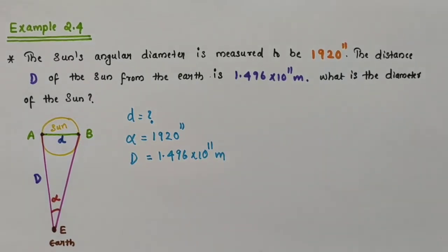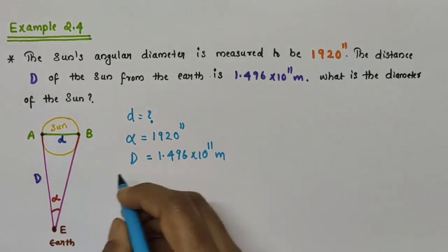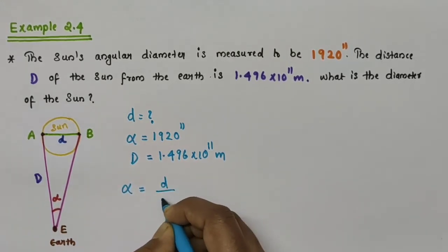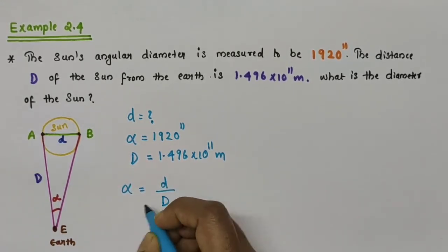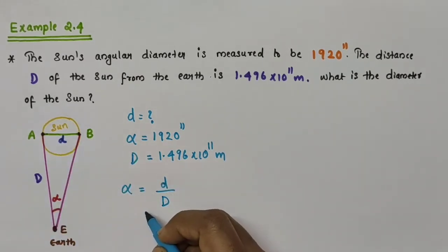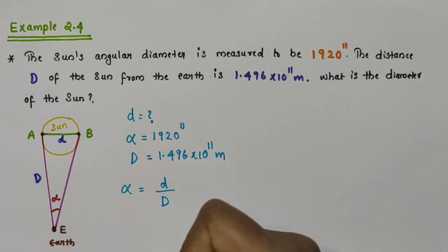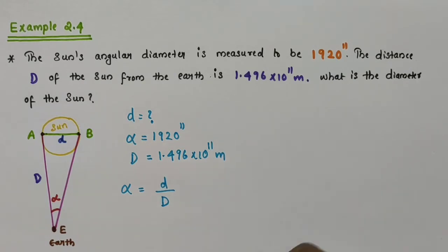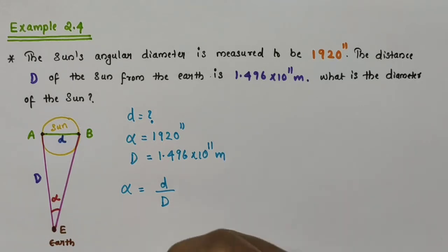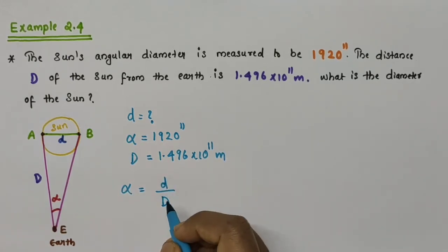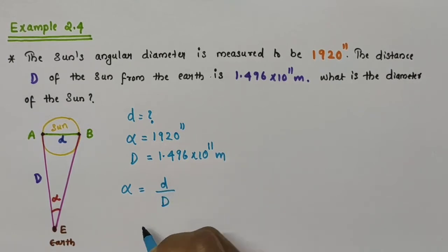Here we can apply the equation: alpha = d / D, that is angle = arc divided by radius. We actually derived this expression in our previous video while discussing the method of parallax. I will provide the link in the description box if you don't remember this.